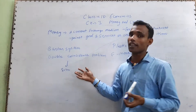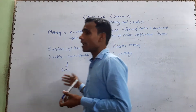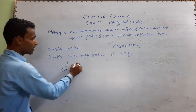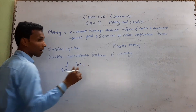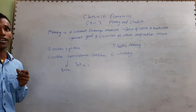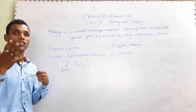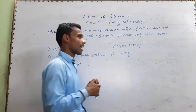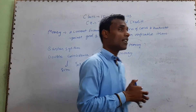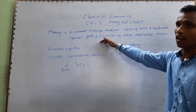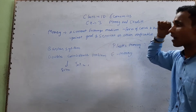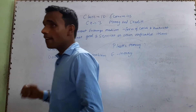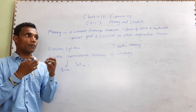Then came the concept of coins made from precious metals. It was called commodity money. Precious metal was very important because it was very hard to obtain. This is precious metal — and it was used as a common coin for exchange.